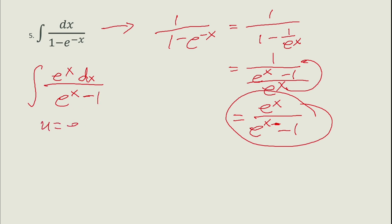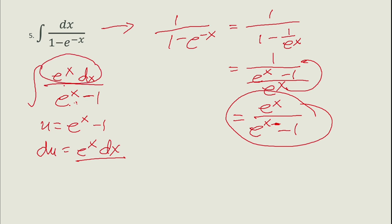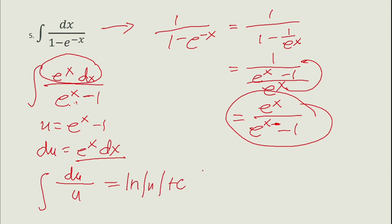Let u equal e^x minus 1. Since the derivative of (e^x minus 1) is e^x, we have du equals e^x dx. So the numerator e^x dx is our du and the denominator is our u. The integral of du over u is ln|u| plus c, giving the final answer: ln|e^x minus 1| plus c.